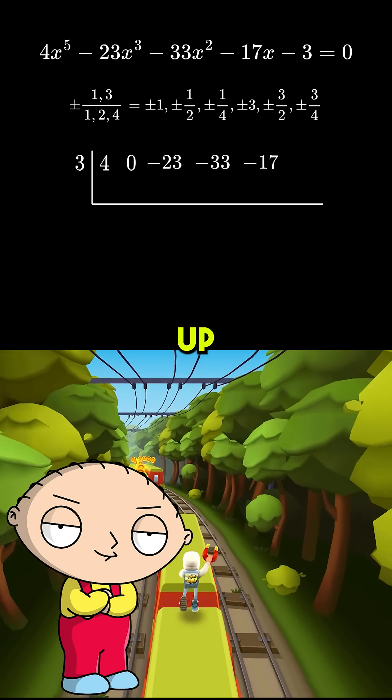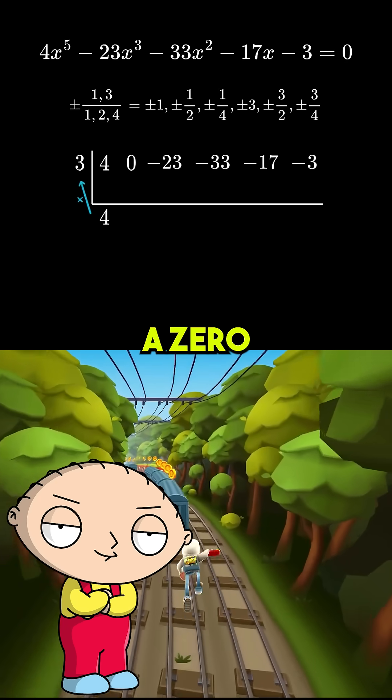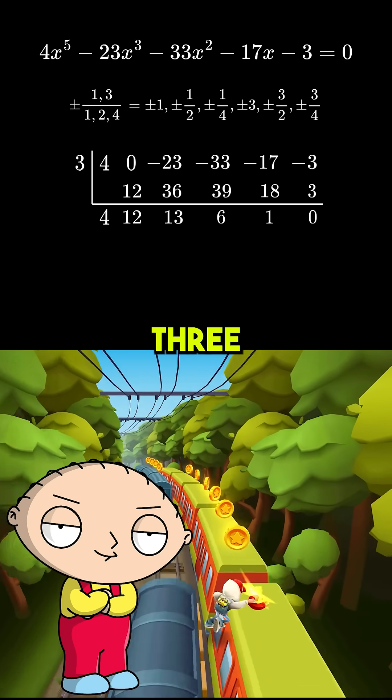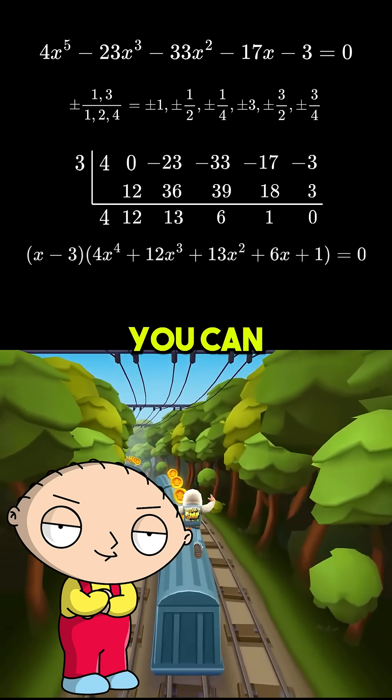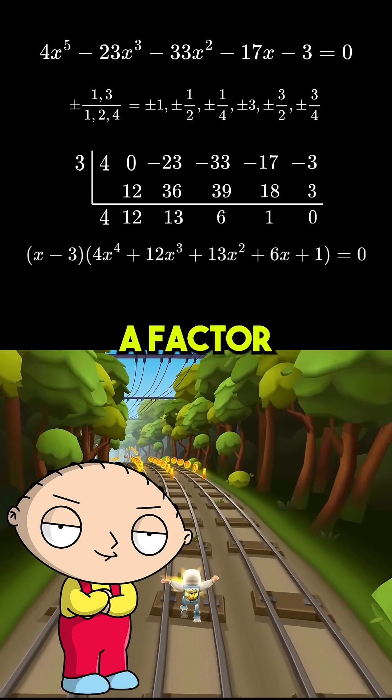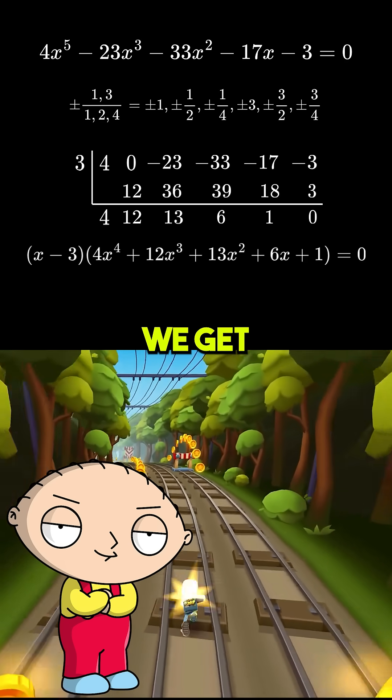Just follow this setup. If we get a 0 at the last, that means x equals 3 is a solution. As you can see, x equals 3 is a solution, and x minus 3 is a factor. So after doing that, we get this equation.